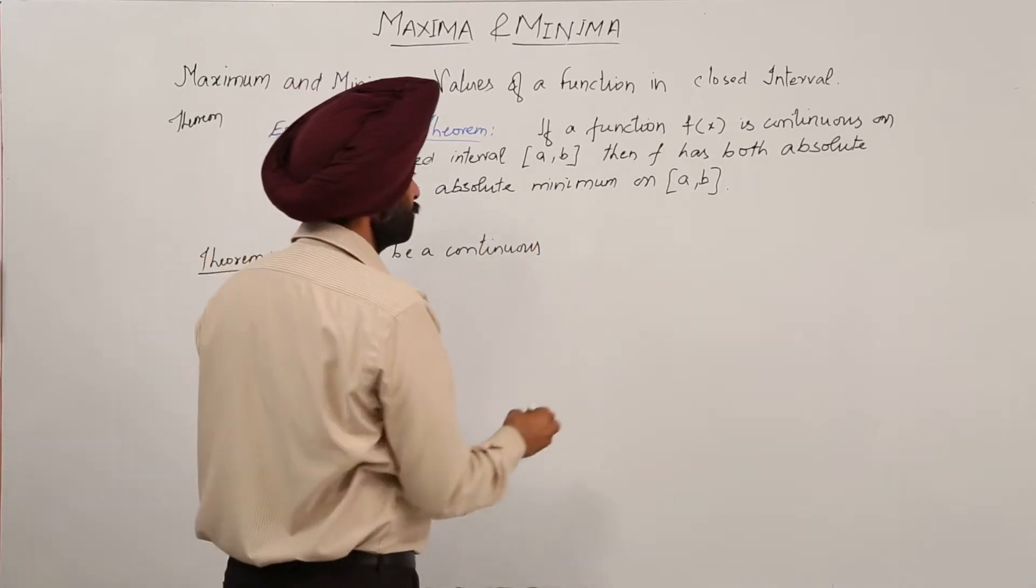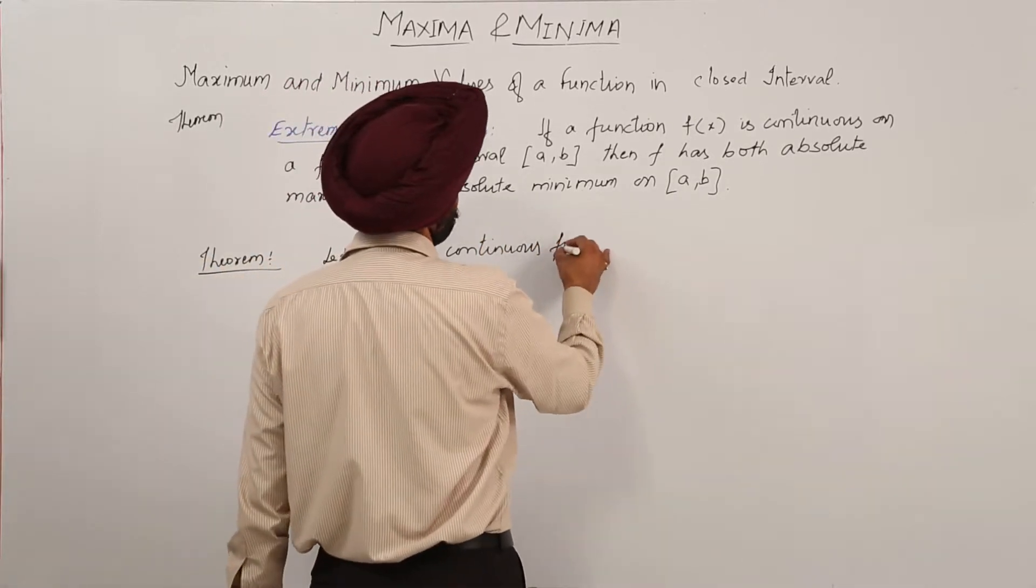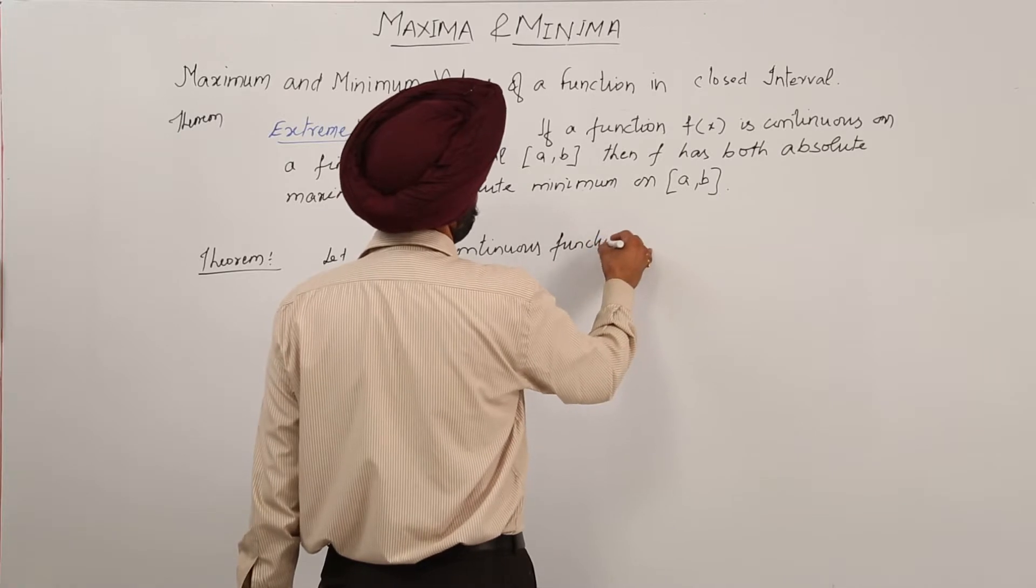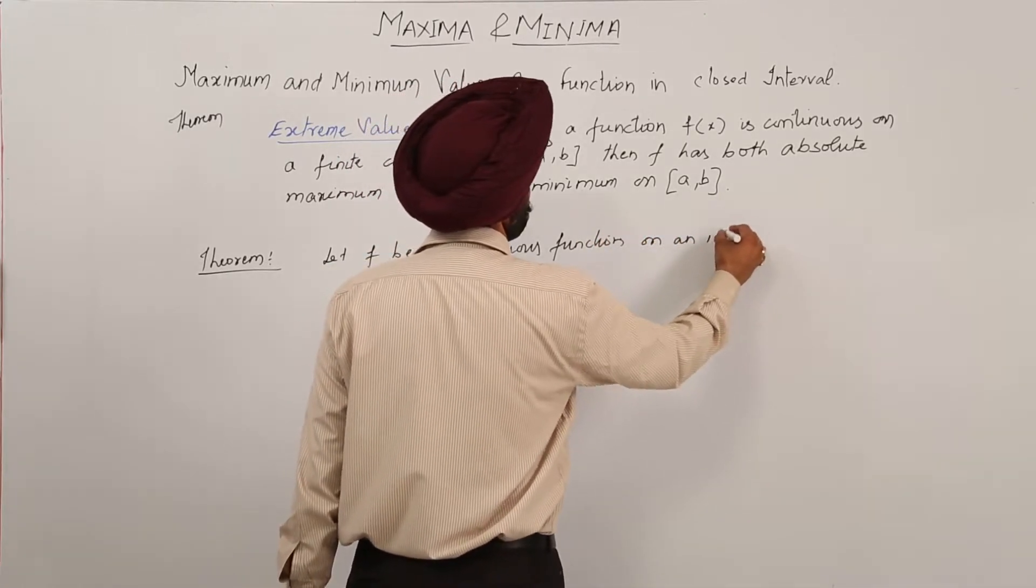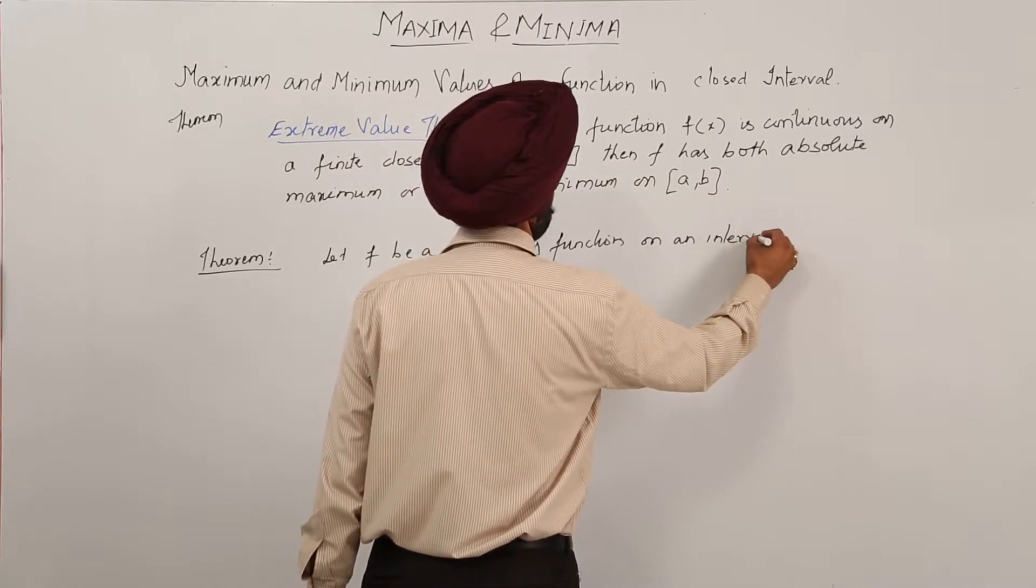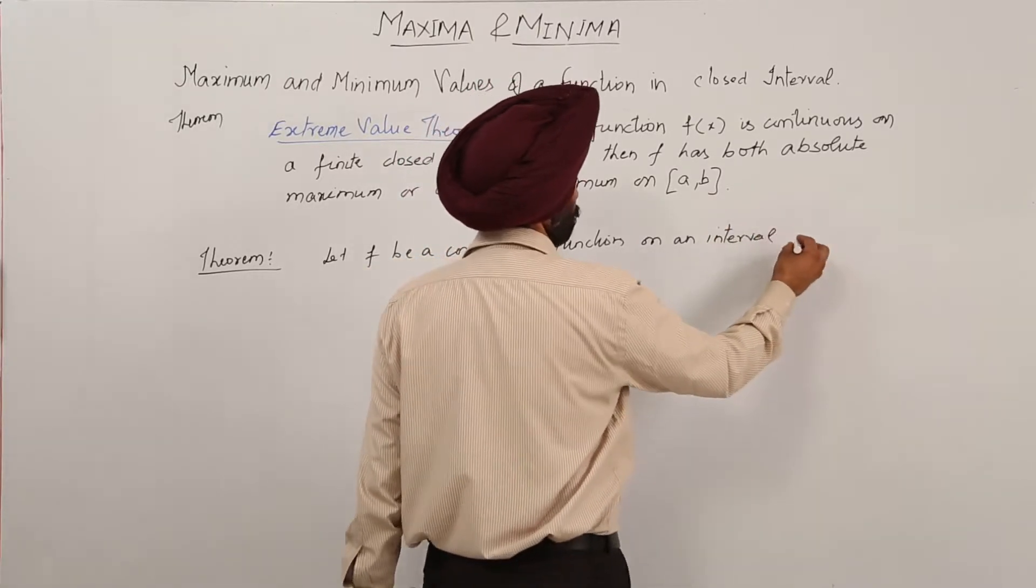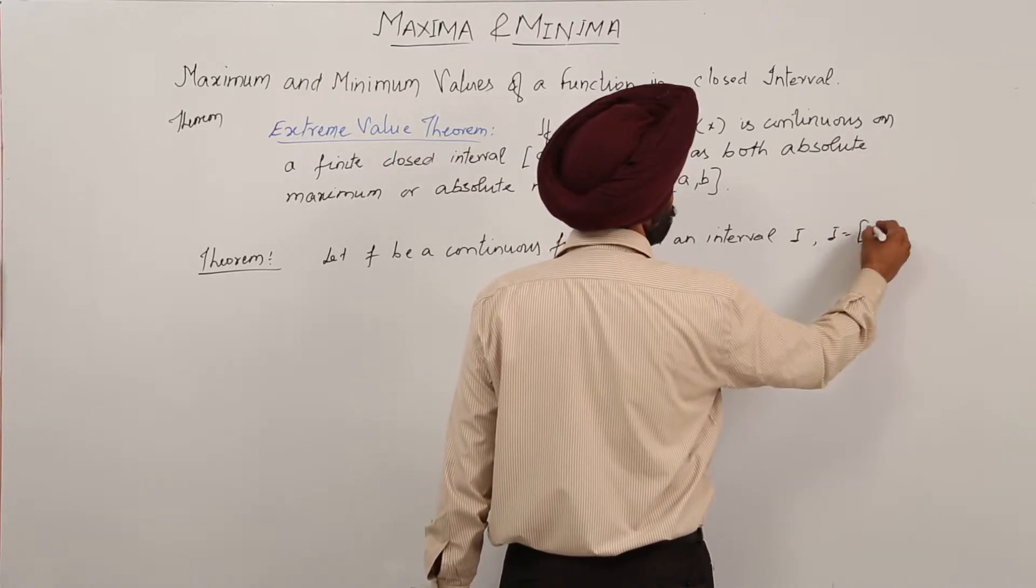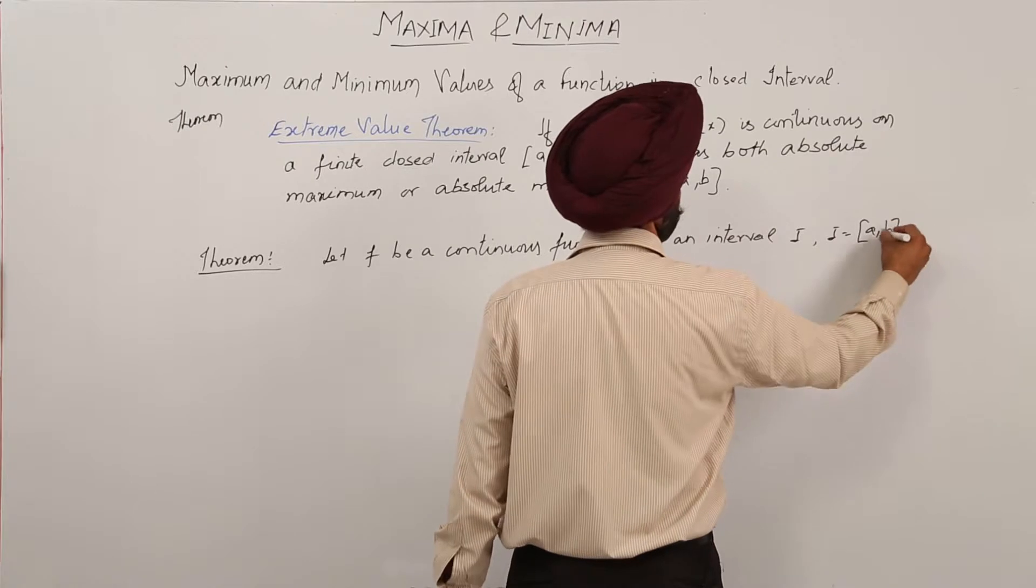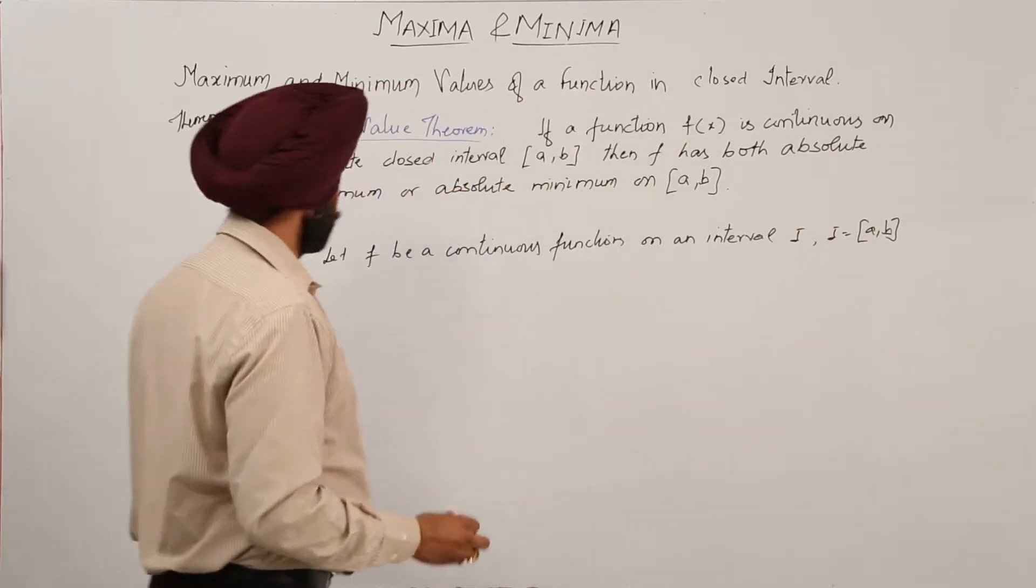continuous, let f be a continuous on an interval, example I, where I, where I is equal to [a, b]. Then